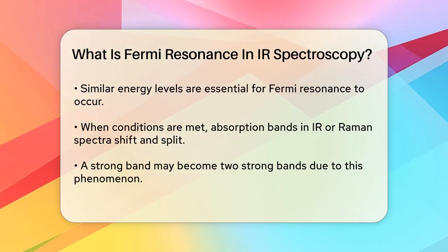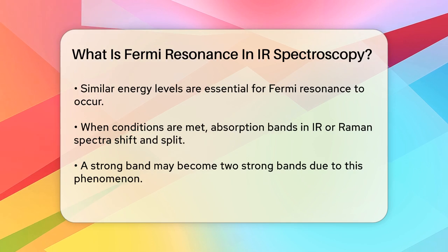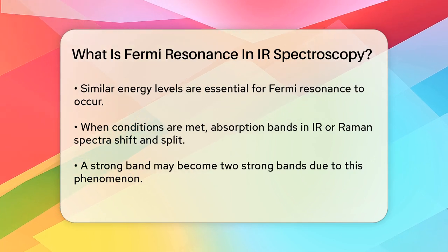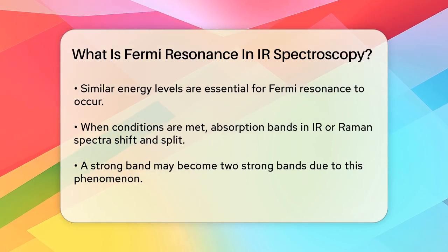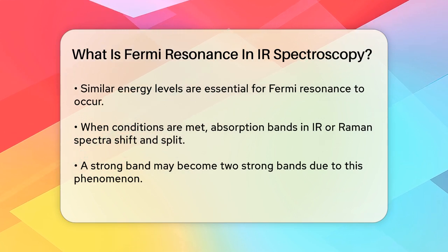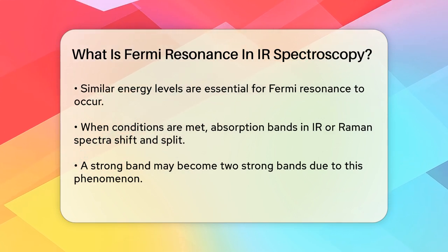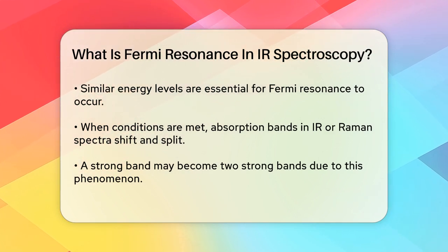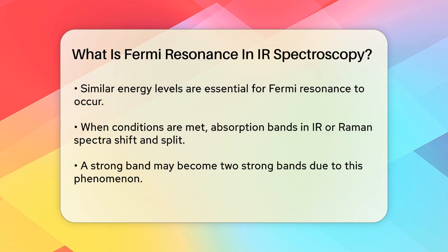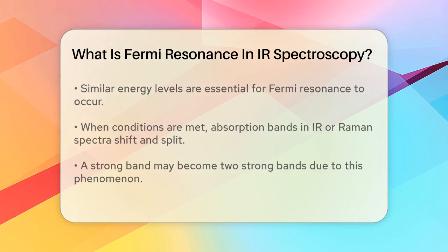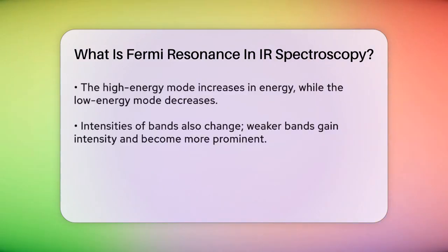This splitting and shifting isn't just about the frequencies — the intensities of the bands also change. The weaker band gains intensity, becoming more noticeable, while the stronger band decreases in intensity. This mixing of wave functions results in two strong bands appearing in the spectrum instead of the expected strong and weak bands.